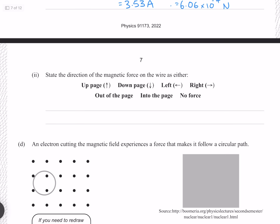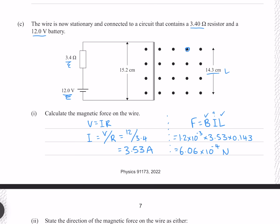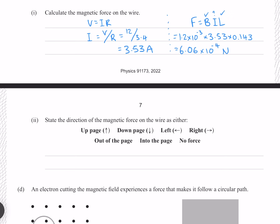State the direction of the magnetic force on the wire. Using the right-hand rule — fingers pointing out of the page in the direction of the magnetic field, thumb pointing in the direction of current from the positive terminal — the palm faces towards the left, indicating the force is directed to the left.